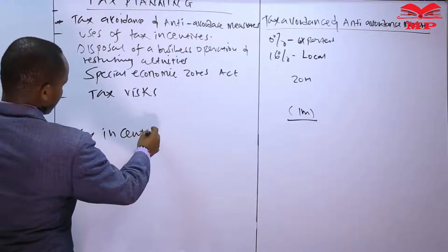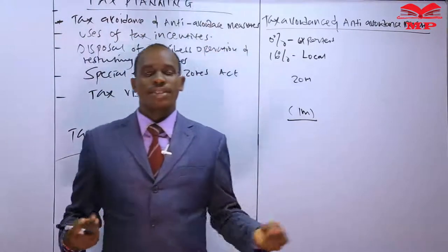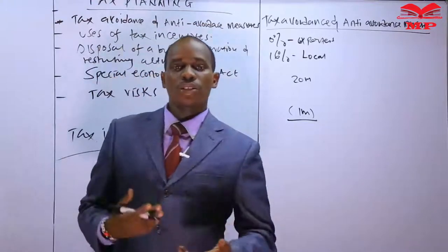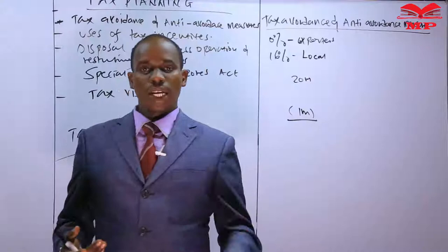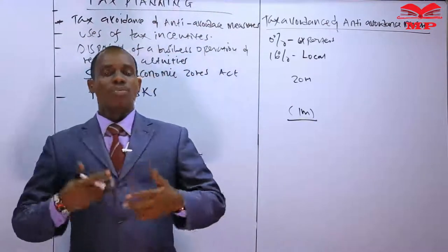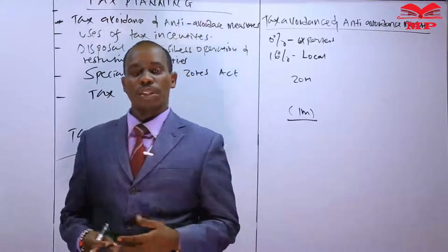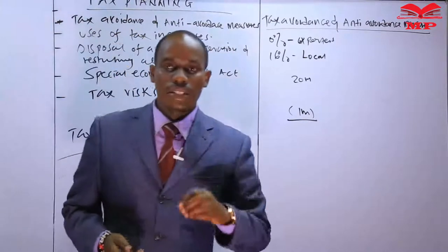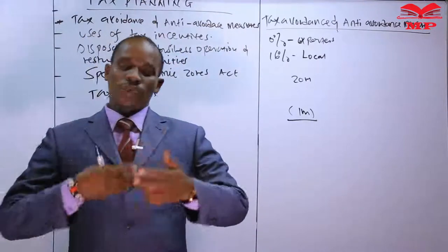Number two is tax incentives. A tax incentive is an incentive granted by the government or KRA to persons or taxpayers in order to encourage them to continue paying tax or to attract new taxpayers to the tax system. The government needs to keep generating more revenue as expenditures continue to increase, and introducing tax incentives is one technique to attract and motivate taxpayers, enabling the government to raise more revenue.